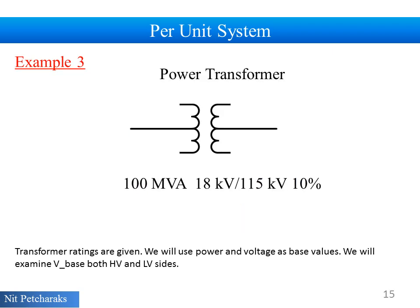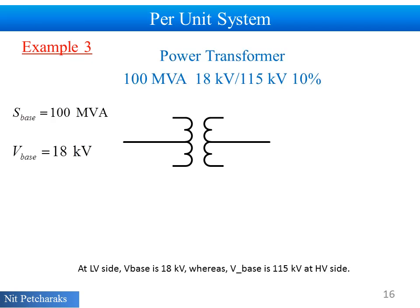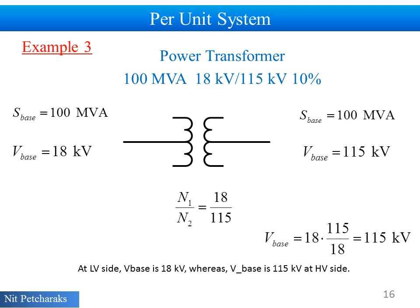Example 3: Transformer ratings are given. We will use power and voltage as base values. We will examine base voltage both high voltage and low voltage side. At low voltage side, base voltage is 18 kV. Whereas, base voltage at high voltage side is 115 kV.